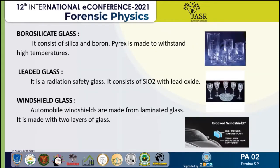Borosilicate glass is a type of glass with the main glass-forming constituents of silica and boron. Pyrex is made to withstand high temperatures and is commonly used for cookware. The theoretical density for borosilicate glass is 2.15 to 2.25 grams per centimeter cubed.